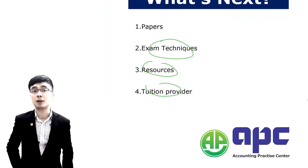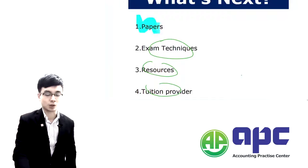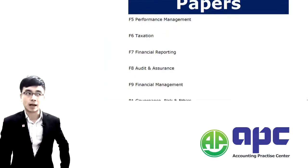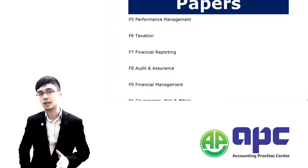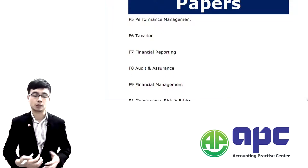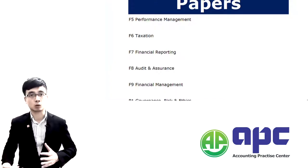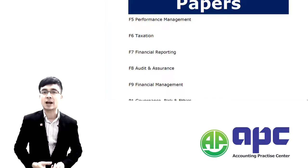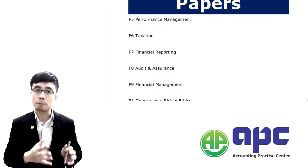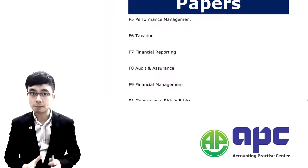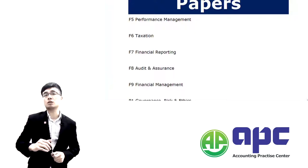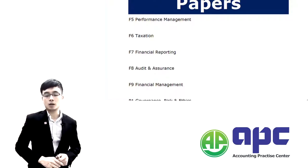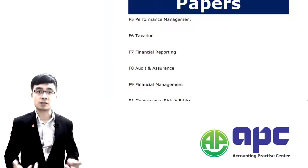Let's look at the papers we're going to select for the upcoming sitting. There are F1 up to F9 and P1 up to P7. Nowadays we have four exam sittings per year, and for each sitting you can choose a maximum of four papers — papers like F5, F6, and so on.